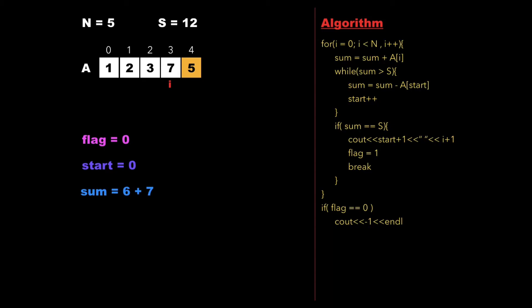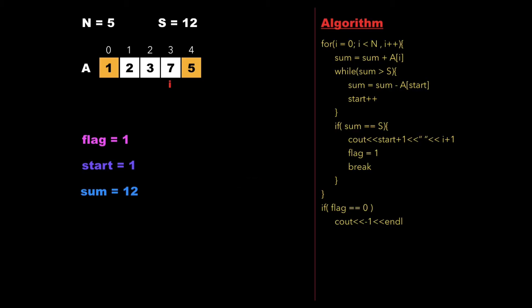We check whether sum of 13 is greater than S which is 12. Since it is, we subtract A[start] from sum, subtracting 1 from 13 to get 12, and increment start — shrinking the subarray from the left. The subarray now contains 2, 3, and 7. We check whether sum equals S: it does, so we update flag to 1, print the starting and ending positions 2 and 4, and break out of the loop.